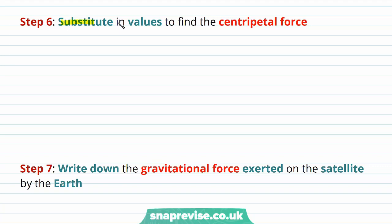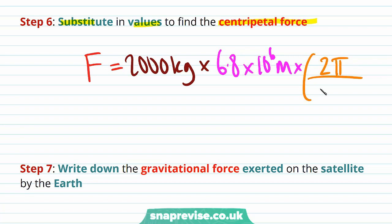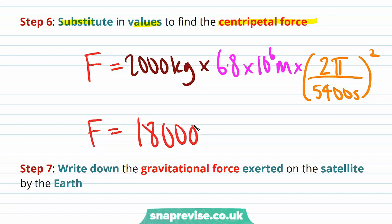Step 6 is to substitute in values to find the centripetal force. So the centripetal force is equal to mass, which is 2,000 kilograms, times radius, which is 6.8 times 10 to the 6 metres, times 2π divided by T all squared, which is 2π divided by 5,400 seconds all squared. Therefore, we find that the centripetal force is equal to 18,000 newtons to two significant figures.